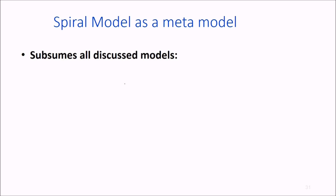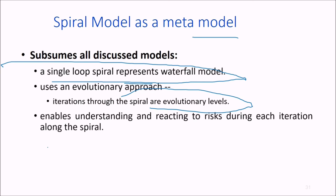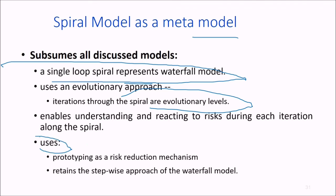The spiral model is a meta model that subsumes all discussed models. A single loop spiral represents the waterfall model. If you use an evolutionary approach, iterations through the spiral are evolutionary levels. It enables understanding and prompt reaction to risk during each iteration. Its uses include prototyping as a risk reduction mechanism and retaining the stepwise approach of the waterfall model.